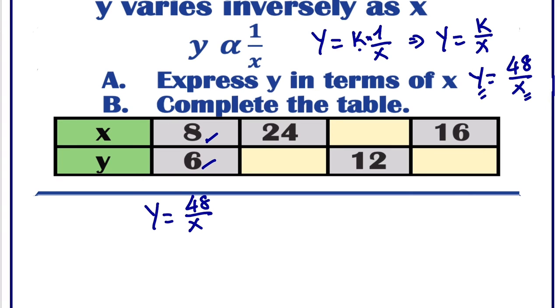So to complete this table, we can see here x was given, y is not given. So we just need to plug in the value of x in the given place. So y will be equals to 48 over x. x here is 24. So 48 divided by 24, y will be equals to 2. So we can complete it here, we have 2.